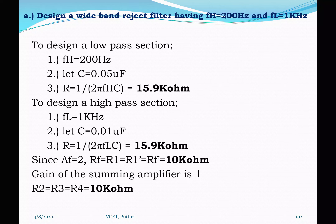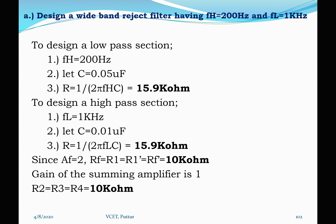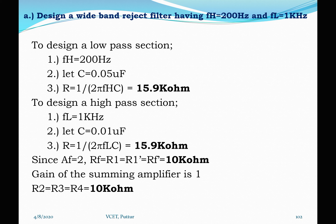Since only one capacitor and one resistor are used at the input of the op-amp, this is a first-order filter. The voltage gain changes at a rate of 20 dB per decade above FH and below FL, with maximum attenuation occurring at FC. A narrow peak appears at FC where all frequencies in the stop band are maximally rejected.